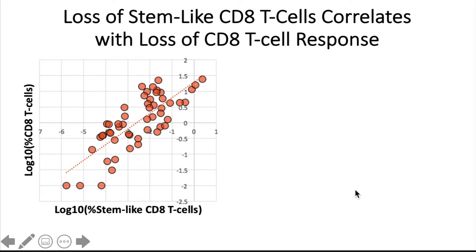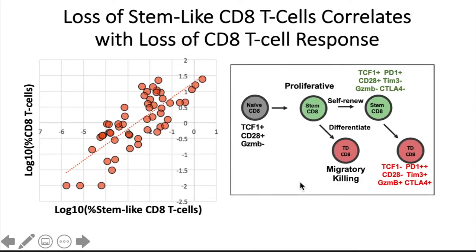Given that lineage relationship, we expect that there might also be a relationship between the amount of total T-cell infiltration to the tumor and the amount of stem-like CD8 T-cells in the tumor — and indeed there is. This means that the loss or absence of the stem-like cell population correlates with the loss of the total T-cell response. When we lose the stem-like CD8 T-cells, we lose the production of new terminally differentiated CD8 T-cells, and we lose the anti-tumor T-cell response. So the question then really becomes: what maintains the stem-like CD8 T-cell population?